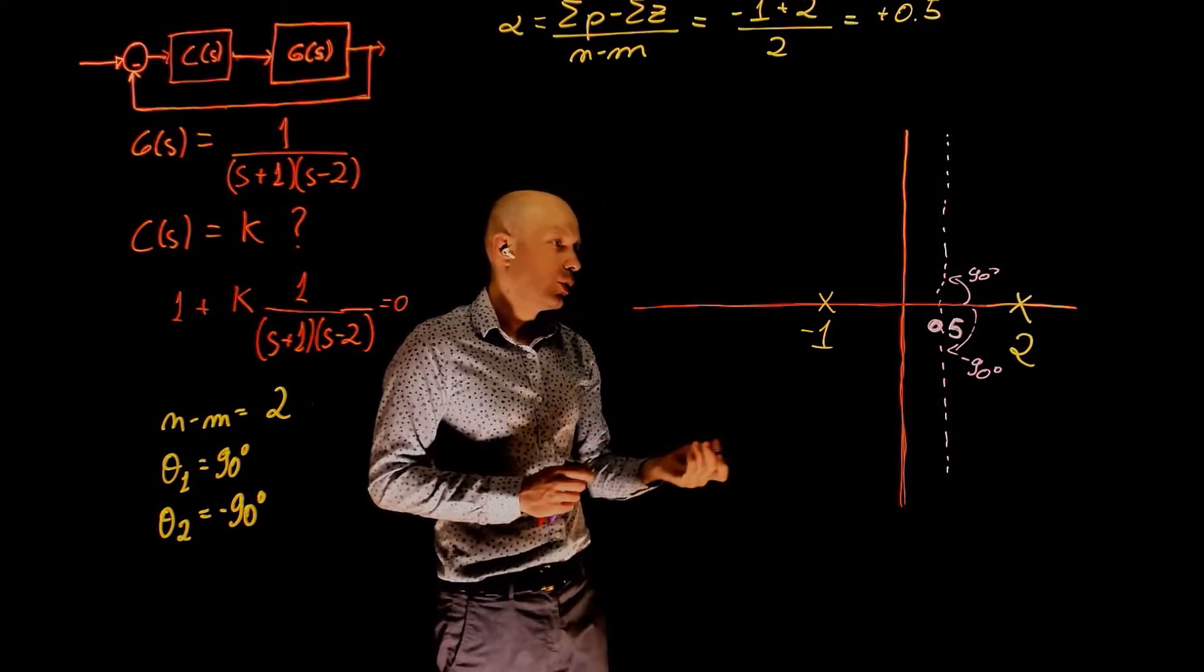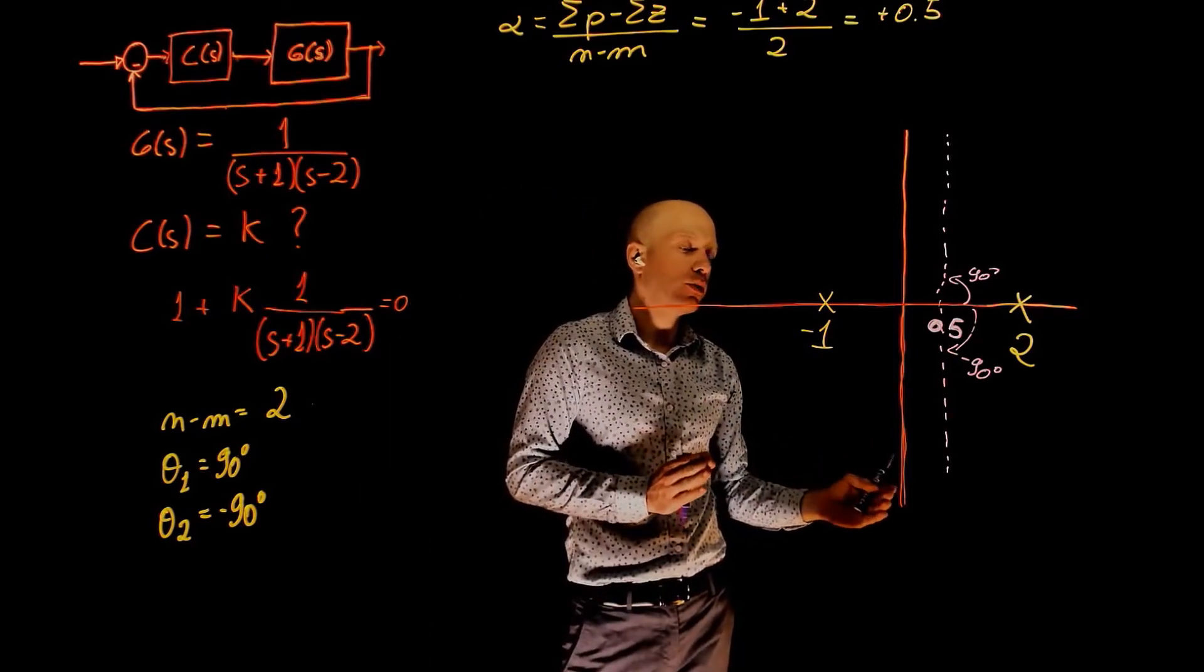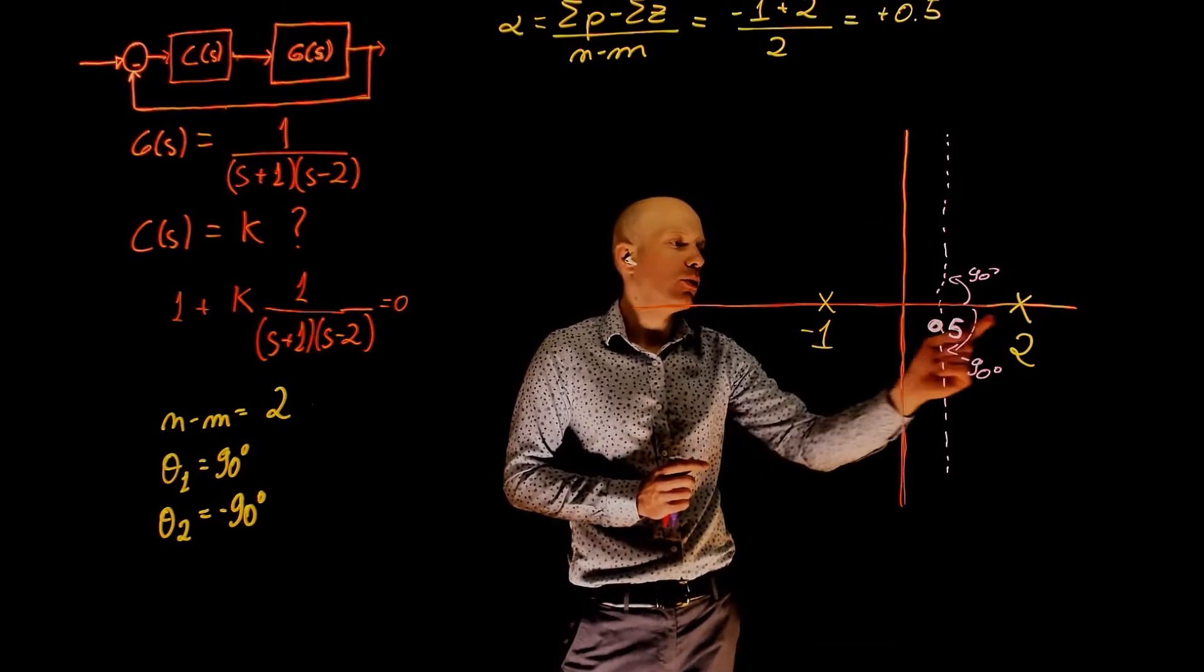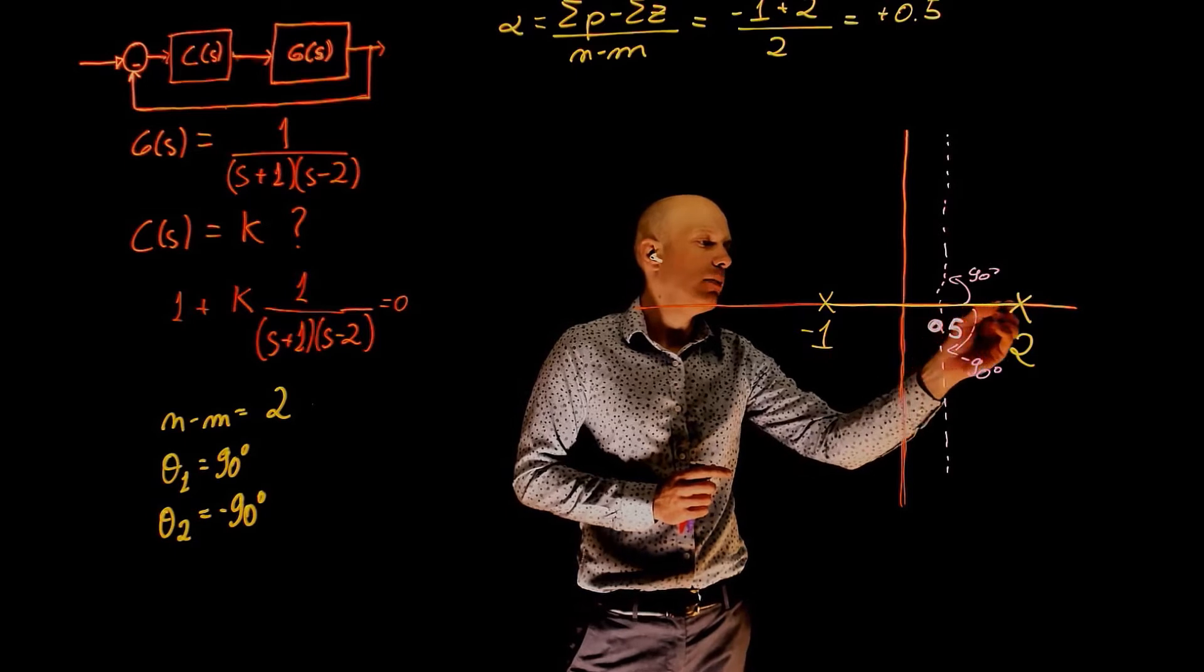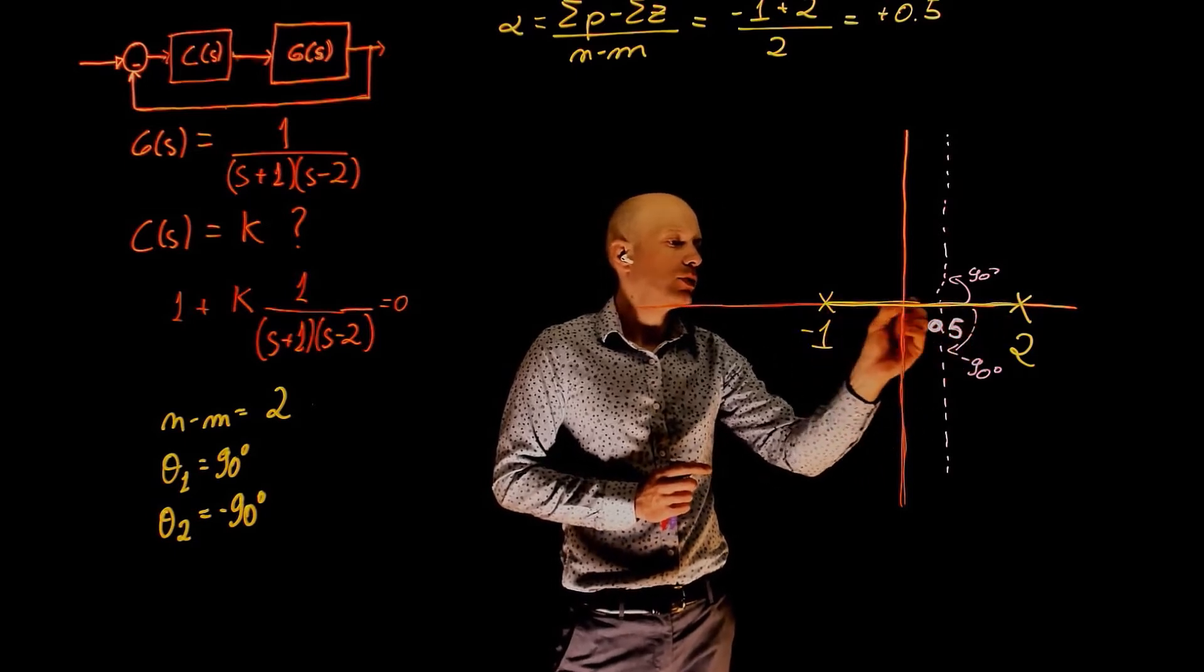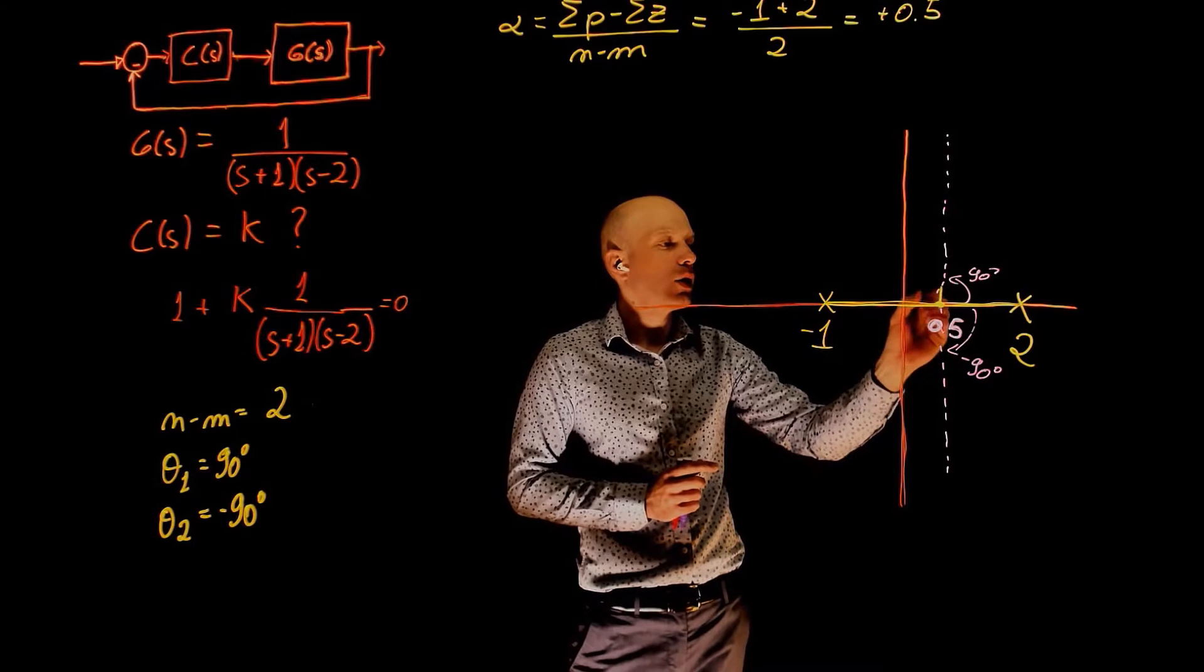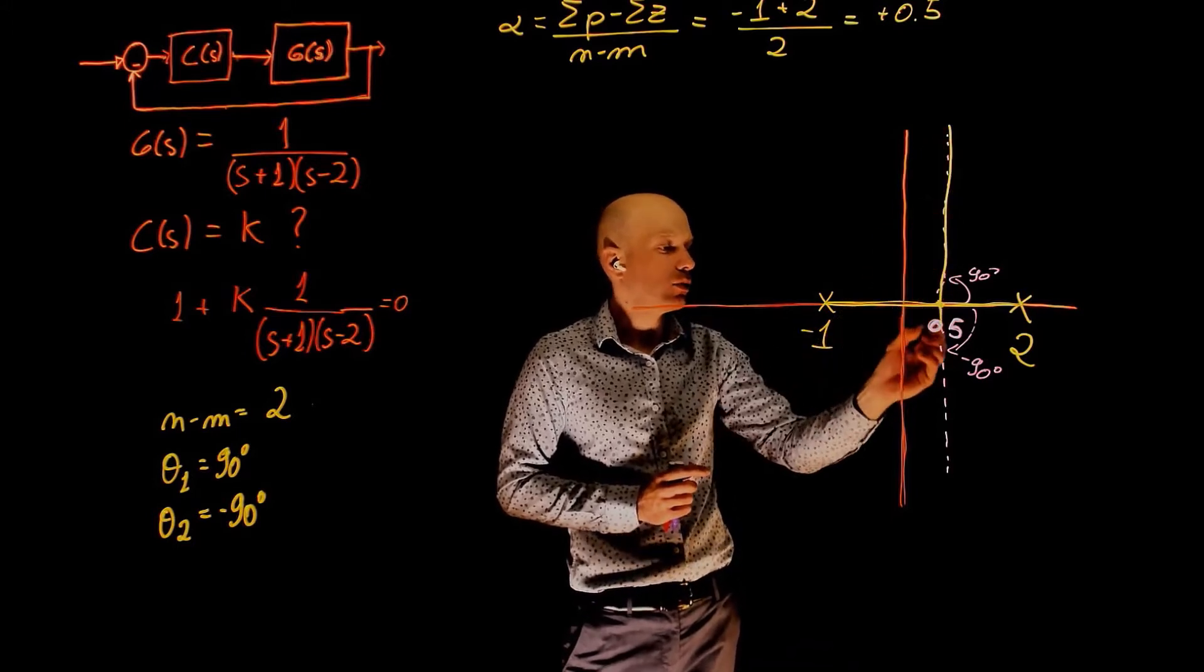We can now complete the root locus. We know that the odd count of poles and zeros is between these two poles. There exists a root locus between them. These two poles will come together to this point, and one will go up, one will go down.